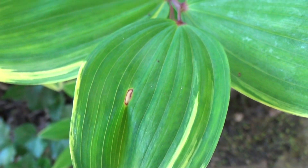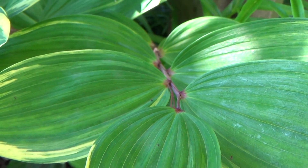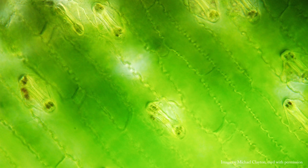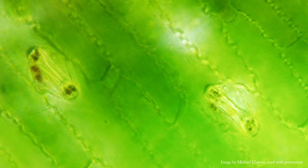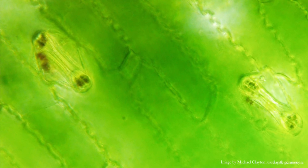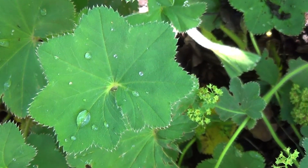Transpiration all starts with the leaves. Leaves have tiny pores called stoma. These pores can be opened and closed depending on what the plants need. Gas exchange occurs here, which is really important for processes like photosynthesis and respiration. It's also the site where water loss occurs in the plant. While the stoma are open, water from the inside of the plant can evaporate into the air.